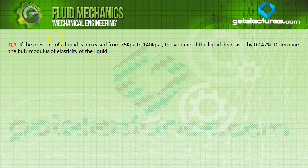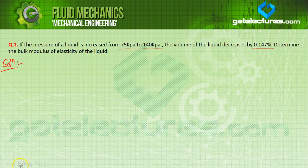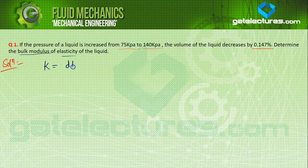First example: if the pressure of a liquid is increased from 75 kPa to 140 kPa, the volume of liquid decreased by 0.147%. Determine the bulk modulus of elasticity of the liquid. The bulk modulus of elasticity is defined as K = dP over (minus dV over V).